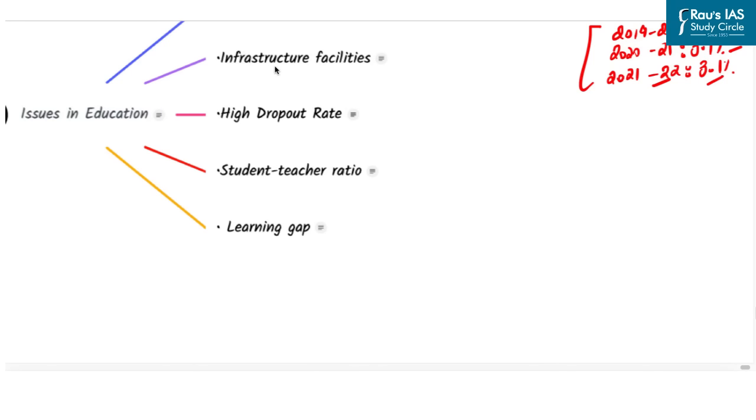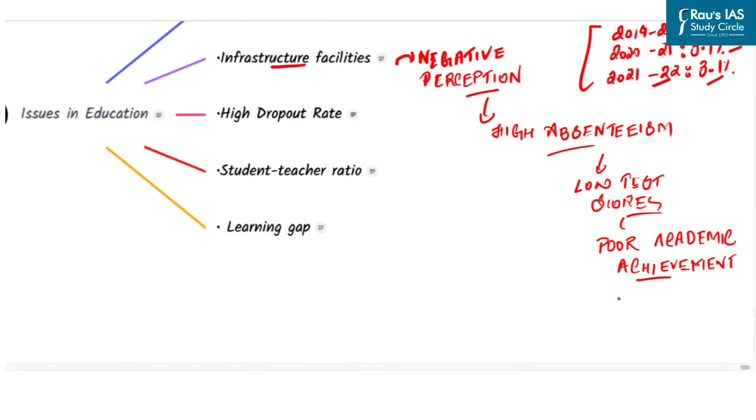The second problem is infrastructure facilities. Poor building conditions such as leaking toilets, smelly cafeterias, broken furniture, classrooms that are too hot or cold, moldy walls and plaster falling off ceilings make students feel negatively about their school norms and expectations. This negative perception of the school's social climate contributes to high absenteeism and in turn that contributes to low test scores and poor academic achievement.